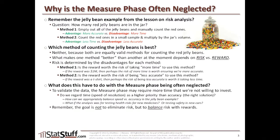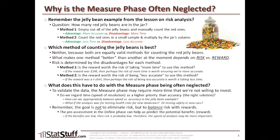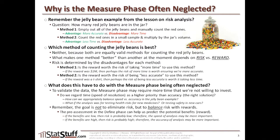Remember, what we're not trying to do is eliminate risk — we want to balance the risk with the rewards. The pre-assessment from the defined phase can help us predict the potential benefits. If the benefits are low, then the risk is probably low, and the speed of analysis may be more important. Otherwise, if the benefits are very high, then the risk is probably very high, and the accuracy of the analysis may be much more important. Whatever method we use, we need to always validate the risks and rewards with our sponsor to ensure they're in complete agreement, and that will help us plan the timeline for how we'll approach the analysis.